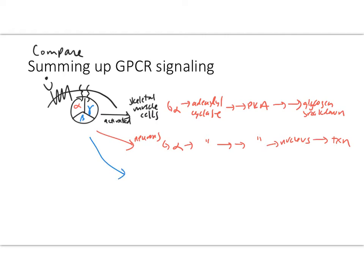In another situation, specifically in the heart pacemaker cells, we followed activated G beta gamma, which directly activated calcium channels and calcium rushed out.